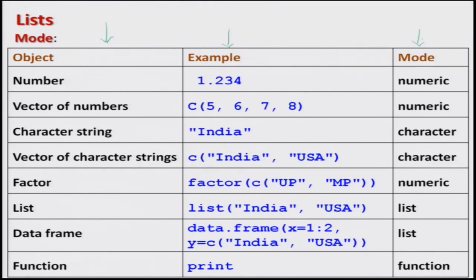An object can be a number — for example, 1.2, 3.4, 5.6, or 7 — and the mode of such a number is called 'numeric'. Similarly, if we take a vector of numbers, such as c(5, 6, 7, 8), all values are numbers, so the mode of a vector of numbers is also numeric. If we take a character string, say 'India', then obviously this is not a number but a character, so the mode of a character string is 'character'.